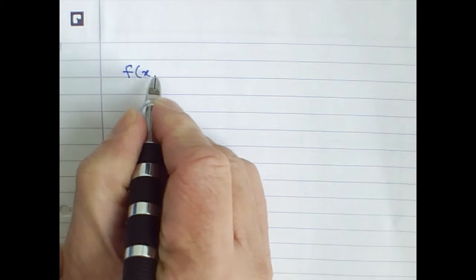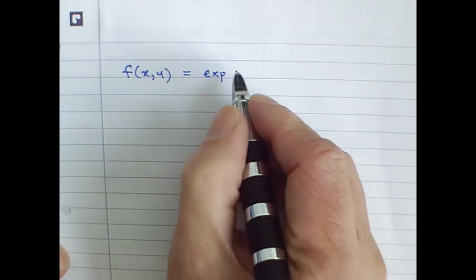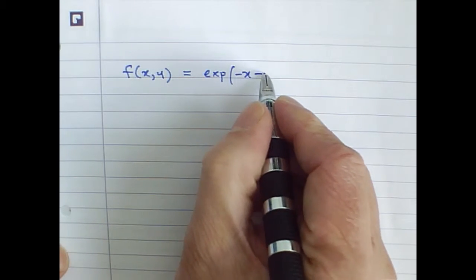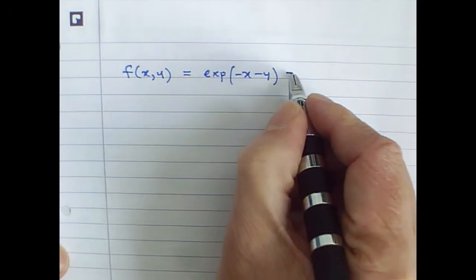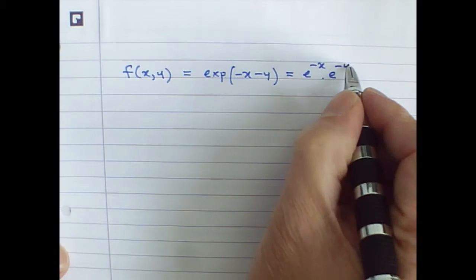Let's start with a function, f(x,y) equals e^(-x-y), which can be alternatively written as e^(-x) multiplied by e^(-y).